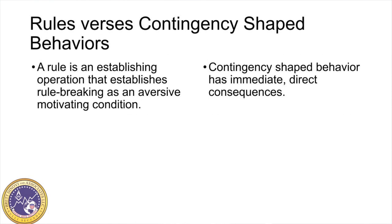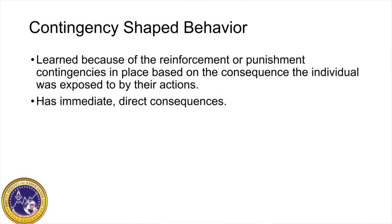Contingency-shaped behavior has immediate, direct consequences. These behaviors are learned because of the reinforcement or punishment contingencies in place, based on the consequences the individual was exposed to by their actions. They have immediate and direct consequences. Unlike contingency-shaped behavior, for rule-governed behavior, the consequences may not necessarily be experienced by the individual.